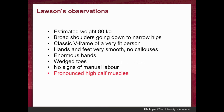Lawson's observations of the body are quite important because he got to see the body up close for all those days. He estimates roughly from the physique that the body would have been around 80 kilograms. He reports that the shoulders are very broad going down to narrow hips — the classic V-frame of a fit person. He noticed the hands and feet were very smooth with no calluses or signs of manual labour. Another interesting observation is that he says the man's hands were enormous.